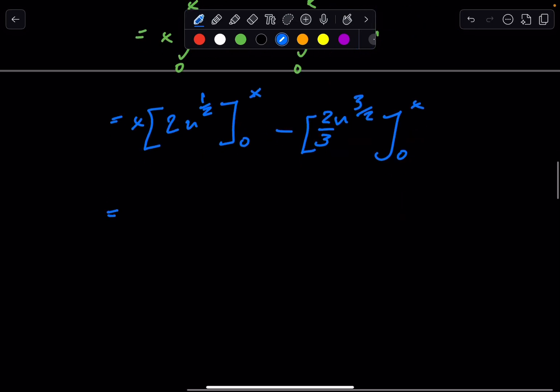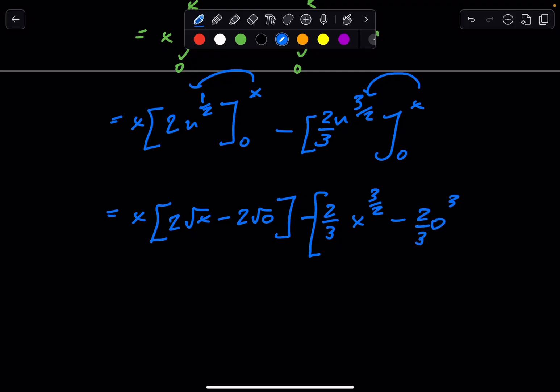And let's keep plugging in. We have x times, let's just plug in the bounds accordingly. You have 2√x minus 2√0, which just becomes 0, minus, let's plug it in here, 2/3, 2/3 x to the 3/2, minus 2/3 to the 0, or just 3/2. So, that becomes 0 as well.